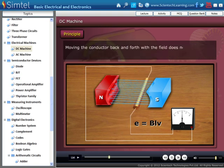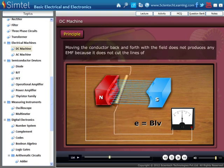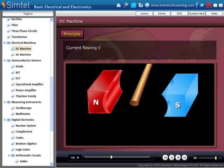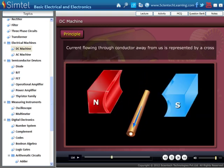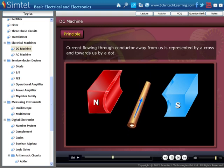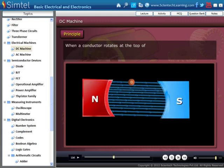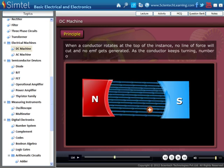Moving the conductor back and forth with the field does not produce any EMF because it does not cut the lines of force. Current flowing through a conductor away from us is represented by a cross and towards us by a dot.